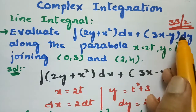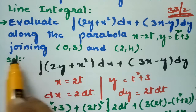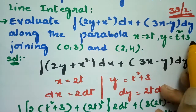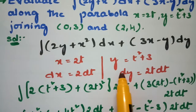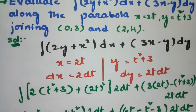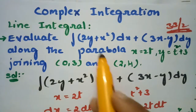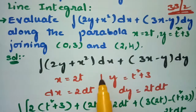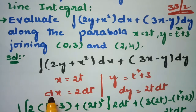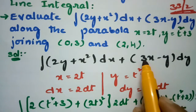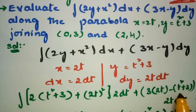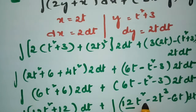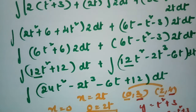To summarize the solution: we evaluated the line integral along the parabola x = 2t, y = t² + 3, joining from (0, 3) to (2, 4). We computed dx = 2 dt and dy = 2t dt, then substituted x = 2t and y = t² + 3 into the integral, transforming everything in terms of t.